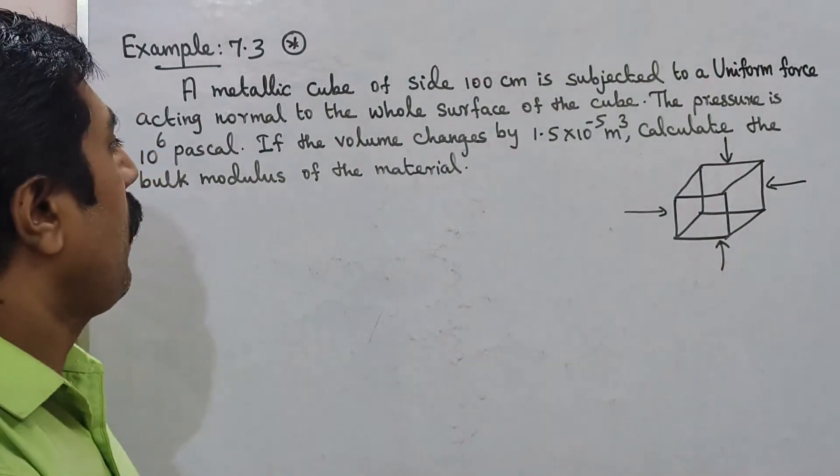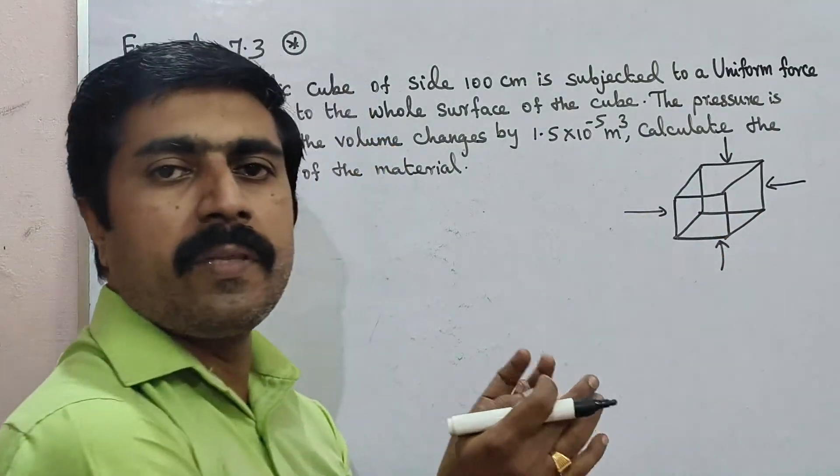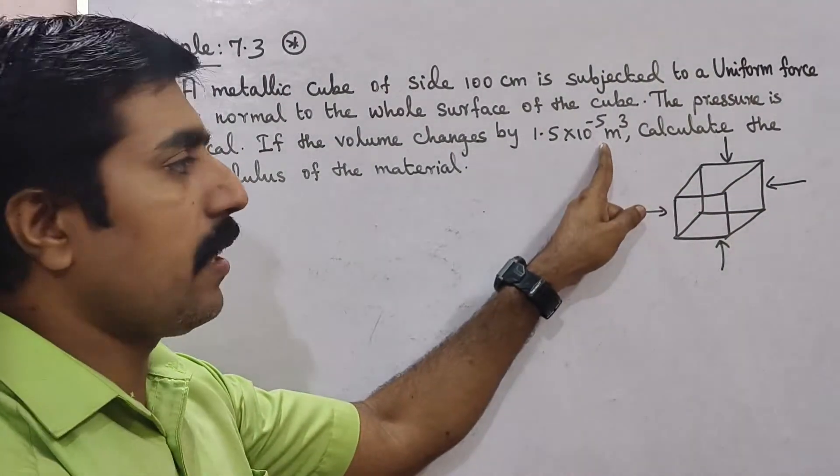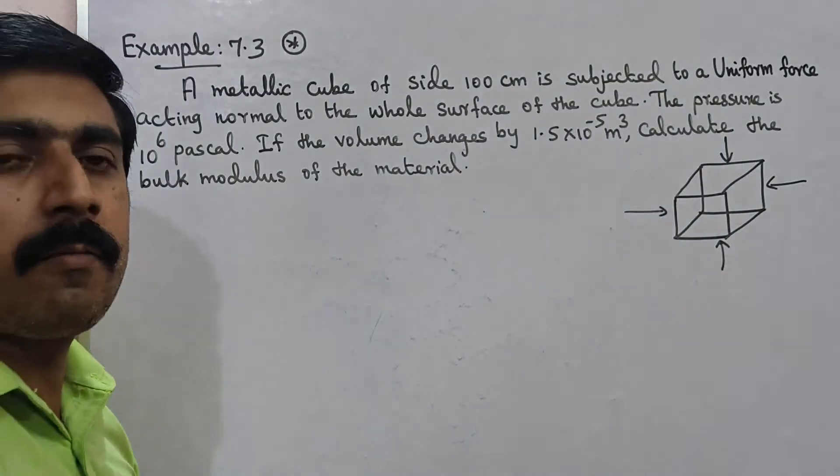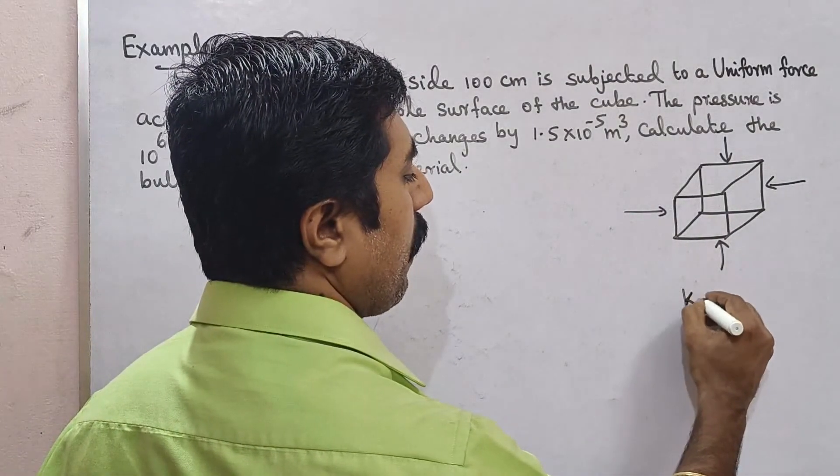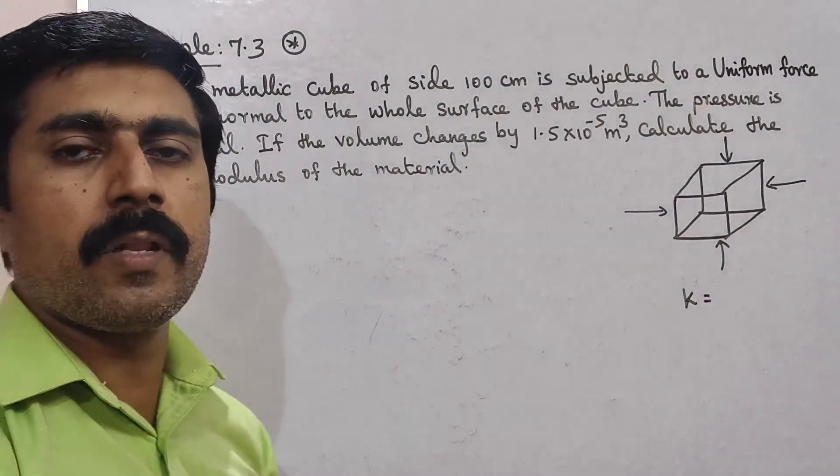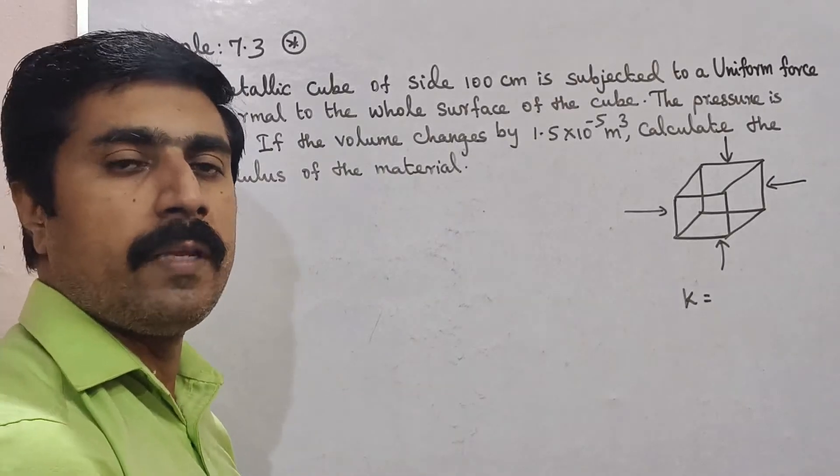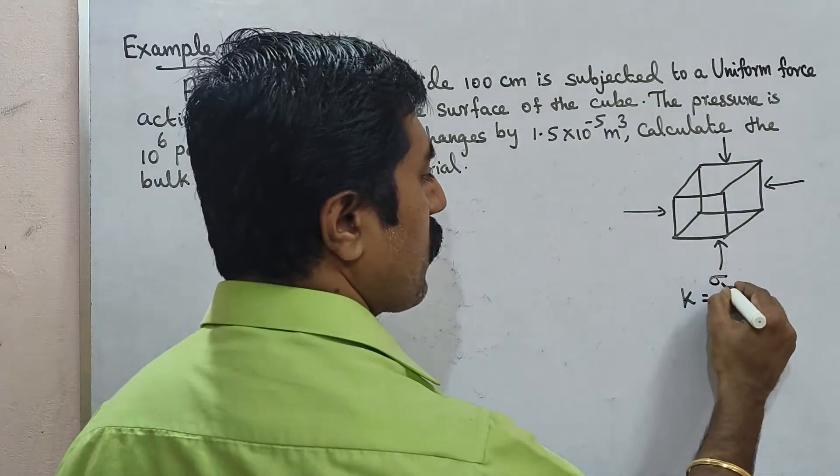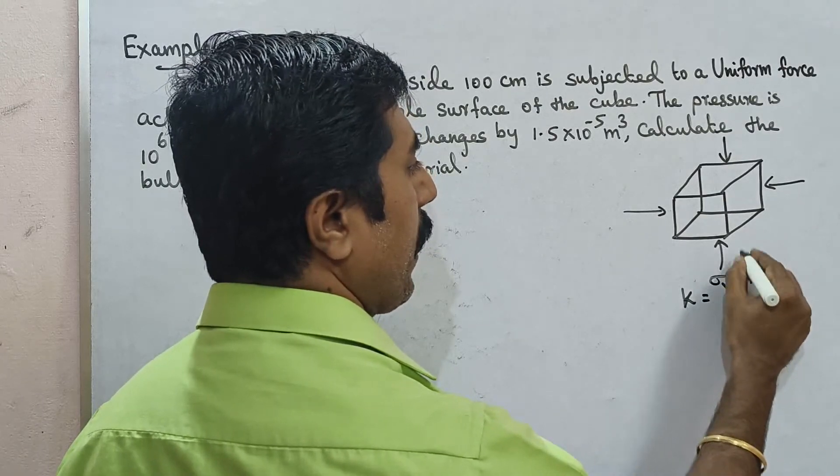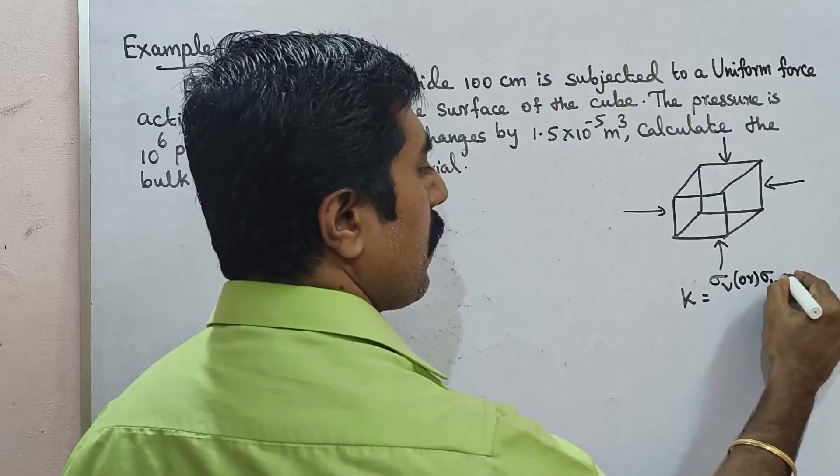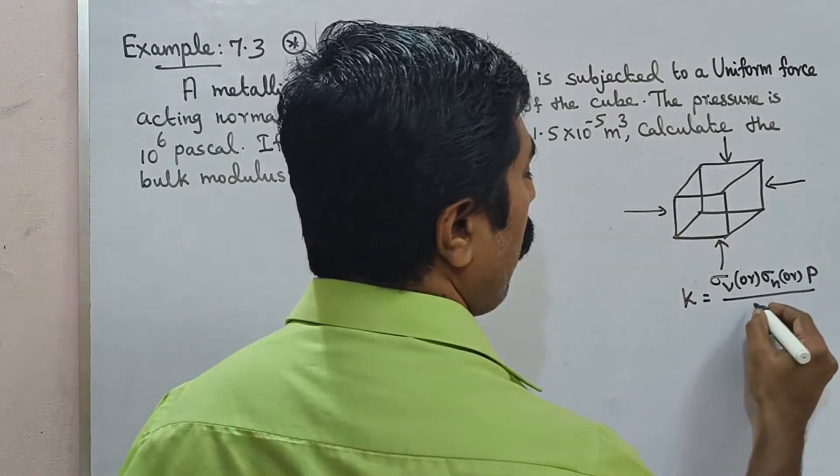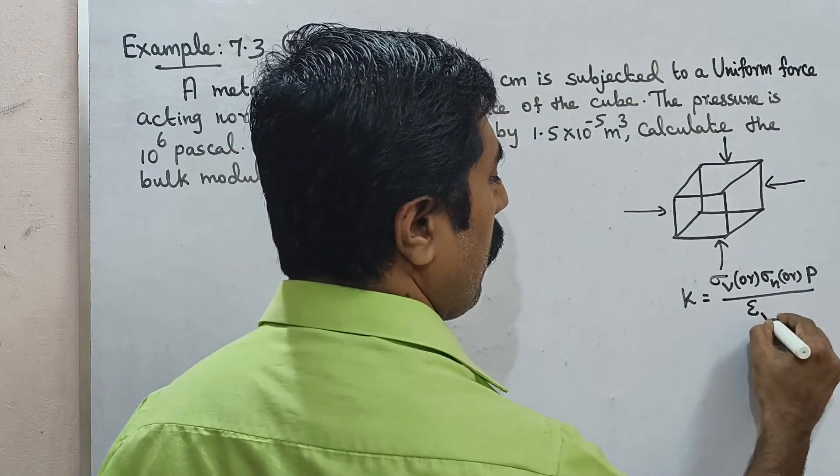So only we can see the pressure that we will create it. Pressure can be created in the same direction. Volume now you can change. Now calculate the bulk modulus K. Expression modulus: stress by strain. Bulk modulus, volume stress by volume strain. Volume stress, force perpendicular acting normal stress, pressure, divided by volume strain.